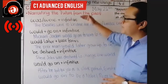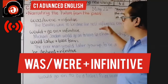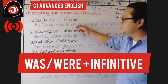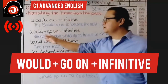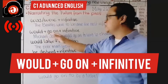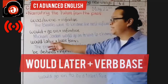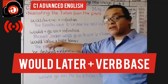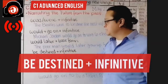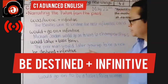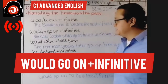These are the structures we're going to work with: first, 'was/were + to + the infinitive' — the infinitive being 'to' plus the verb in the base form. Second, 'would go on + to + infinitive.' Third, 'would later + base form of the verb.' Fourth, 'be destined + to + infinitive.' And fifth, 'would go on + to + infinitive' again.